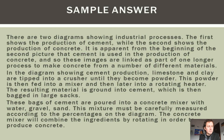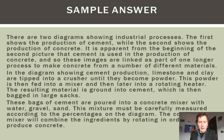The next two paragraphs describe the left and then the right diagram. In the diagram showing cement production, limestone and clay are tipped into a crusher until they become powder. This powder is then fed into a mixer and then later into a rotating heater. The resulting material is ground into cement, which is then bagged in large sacks. You can see the repetition of the passive voice — tipped, is fed, is ground, and is bagged.